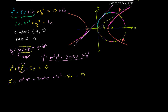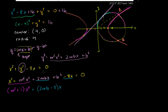If we write this as a quadratic in terms of x, the x squared terms give us m squared plus 1 times x squared. The x terms give us plus 2mb minus 8 times x. And then we just have the constant term b squared, so plus b squared equals 0.